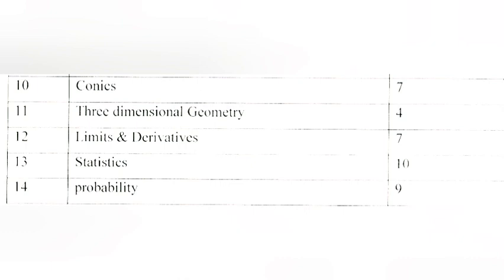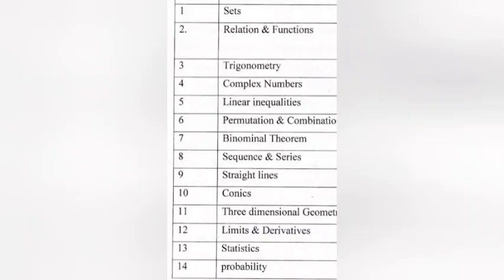Chapter fourteen - Probability, nine marks. Statistics carries ten marks and Probability nine marks. High-mark chapters: Relations and Functions, Permutation and Combination, Conics, Limits and Derivatives — seven marks each. Sequence and Series and Straight Lines — six marks each.